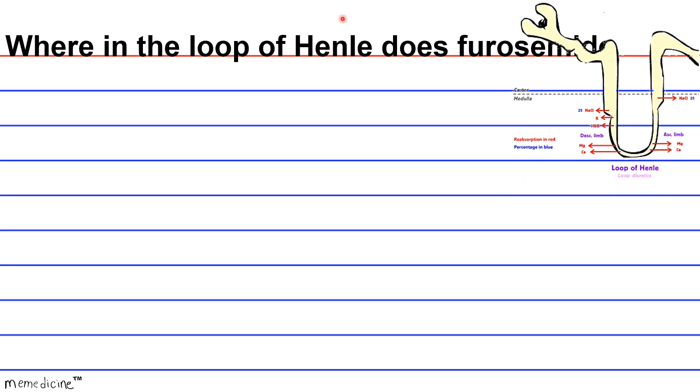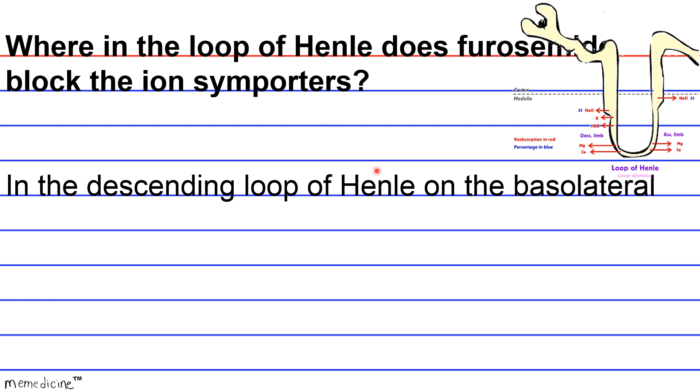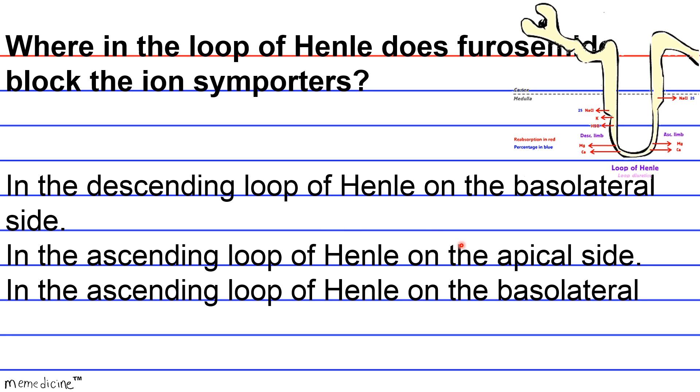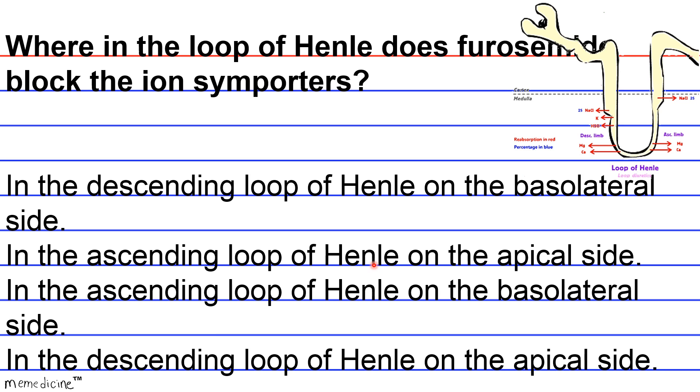Where in the loop of Henle does furosemide block the ion symporters? Is it A, in the descending loop of Henle on the basolateral side? Is it B, in the ascending loop of Henle on the apical side? Is it C, in the ascending loop of Henle on the basolateral side? Or is it D, in the descending loop of Henle on the apical side? I'll give you a moment to think.